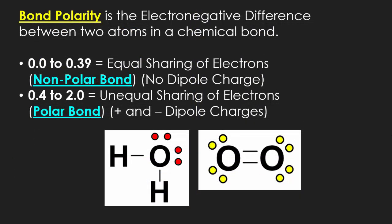So revisiting the idea of bond polarity, bond polarity is the electronegative difference between two atoms and a chemical bond. So don't forget, to be a nonpolar bond, you must be between 0 and 0.39.